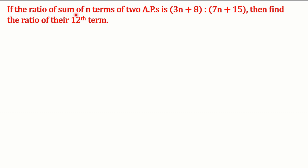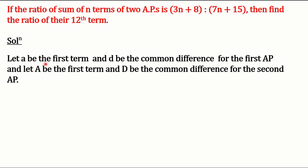If the ratio of sum of n terms of two APs is (3n + 8) to (7n + 15), then find the ratio of their twelfth term. For the solution, let 'a' be the first term and 'd' be the common difference for the first AP, and let capital 'A' be the first term and capital 'D' be the common difference for the second AP.